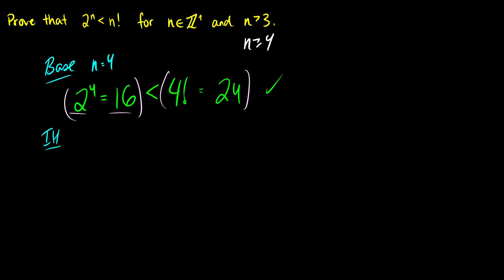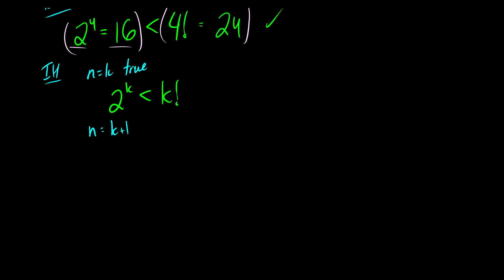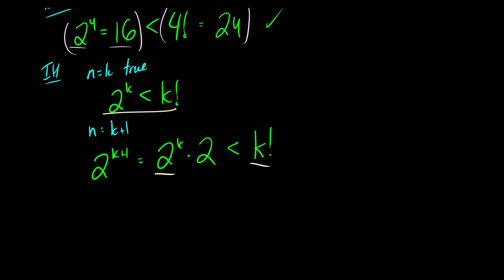It's going to get a bit confusing for the next part. So for the inductive hypothesis we say that n equals k is true, which means that 2 to the k is less than k factorial — we're establishing that. Now we're going to show that n equals k plus 1 is true. So let's substitute k plus 1 for n, giving us 2 to the k plus 1. And can we write that differently? Yes — we can write that as 2 to the k times 2. So 2 to the k is less than k factorial by our assumption. Now what about 2? Well, 2 is also going to be less than k plus 1.